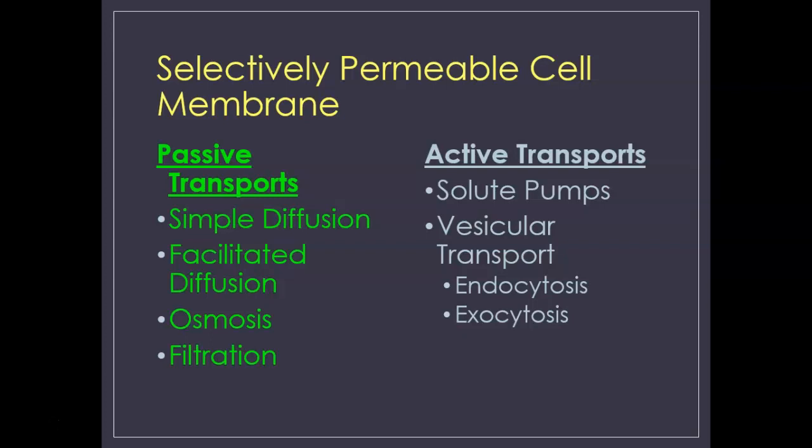That takes us to our first topic: how things move across that selectively permeable cell membrane, which allows some things to move and blocks others. Passive means no resistance — if I push against a door and it opens easily, that didn't take a lot of energy. When moving things across a cell membrane passively, it takes no energy at all, because things move from where there's more to where there's less. If there's resistance — moving things the opposite way — that requires energy, and that's going to be active transport. In passive transport we see four examples: simple diffusion, facilitated diffusion, osmosis, and filtration.